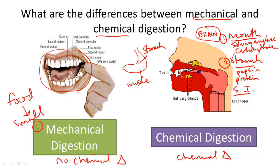But what about fats? Fats start to be broken down in the stomach using a substance called bile, but they are finally broken down into their components — such as fatty acids — in the small intestine. Using pancreatic enzymes, the fats are finally broken down into smaller pieces in the small intestine.